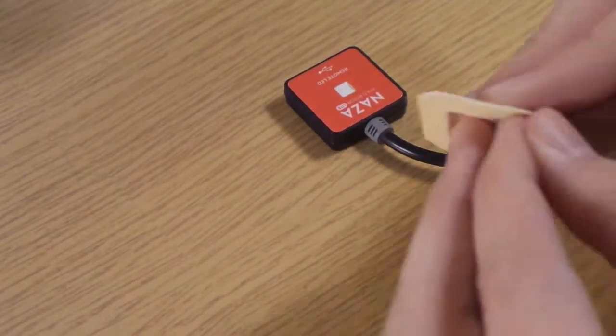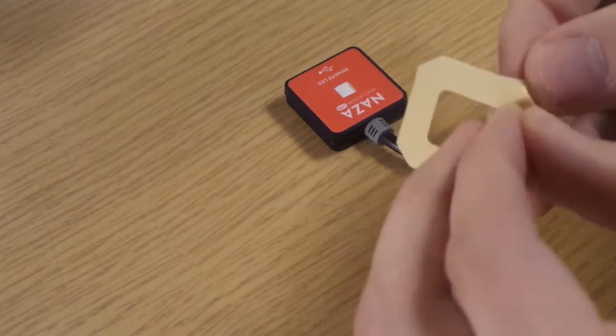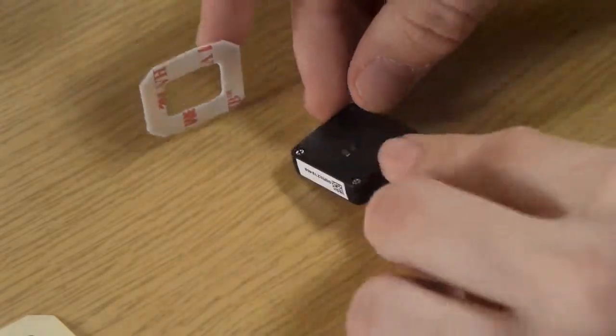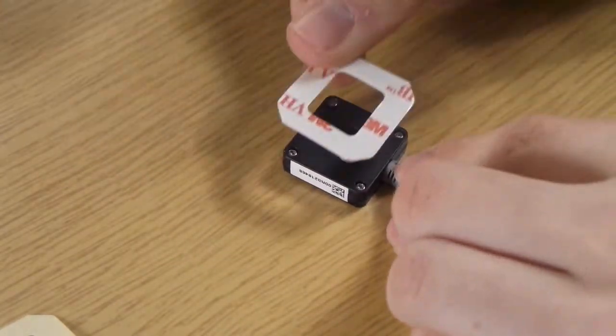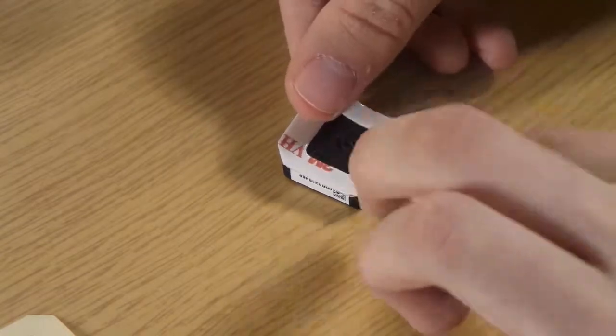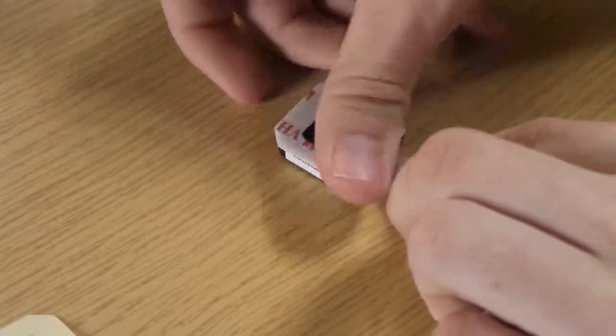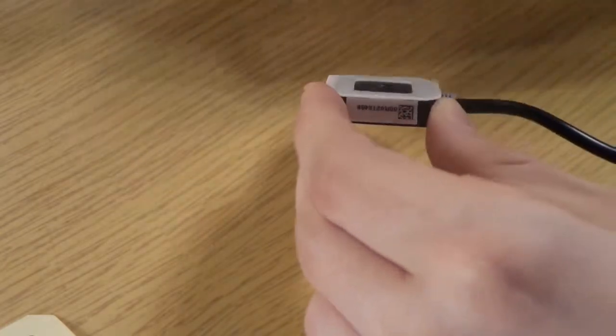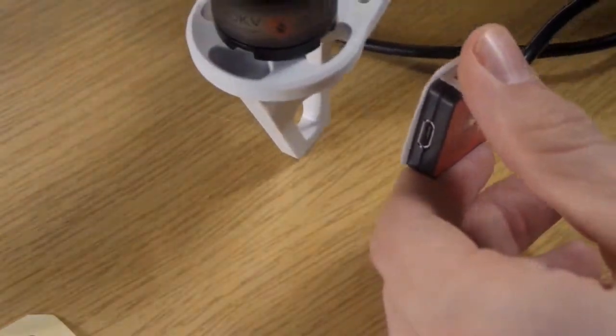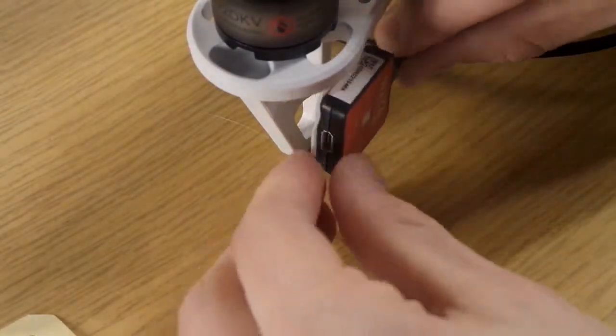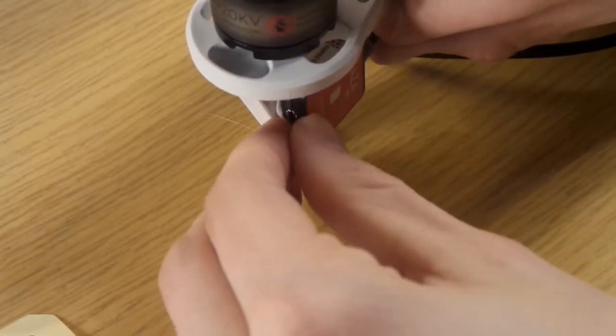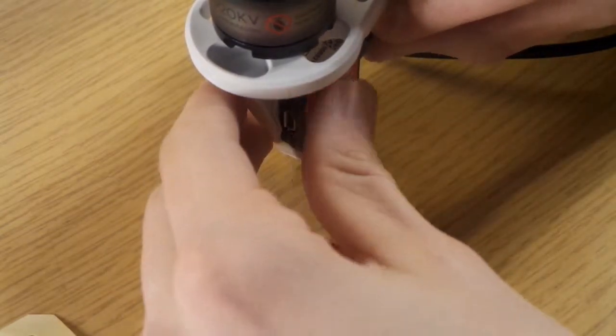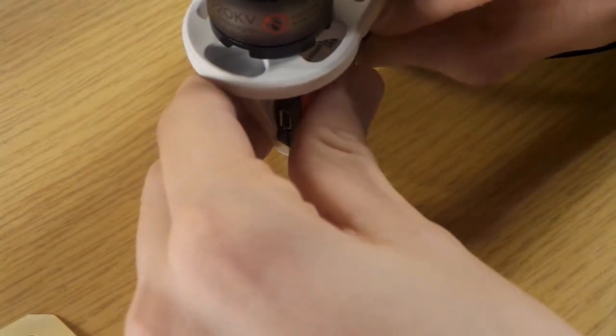Now we take the LED and stick it onto the quad. We take another sticker and stick it on the back of the LED and then you can stick the LED wherever you want. I will stick it onto one arm because you see the LED very good and you can plug in the USB cable also very easily.